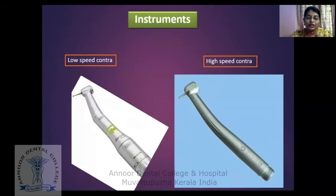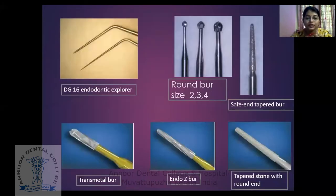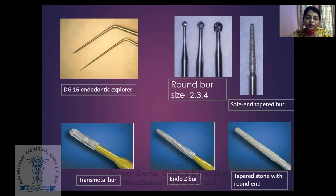Coming to the instruments — there are various instruments used during the process. These include low-speed and high-speed contra-angles, that is the air rotor and the micromotor. Then the BG-16 endodontic explorer. Round burrs, which come in three sizes — 2, 3, and 4 — depending on the tip diameter.